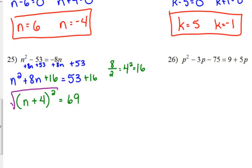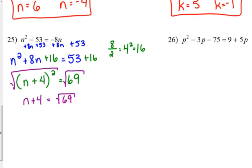Take the square root of both sides. n plus 4 is equal to the square root of 69. 69 is not a perfect square. So, we just leave it like that. We do not do anything else. Oh, I forgot my plus and minus. Always put the plus and minus in front of it.